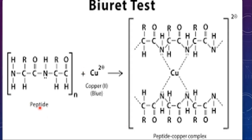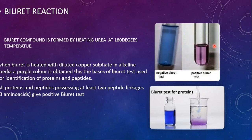Looking at the reaction: the peptide bond interacts with copper ions present in the reagent to form a complex. This peptide-copper complex produces the purple-blue color you observe. This biuret reaction is very important for the identification of proteins in any given sample and is widely used in educational institutes to identify protein in samples.